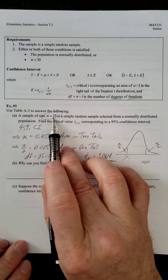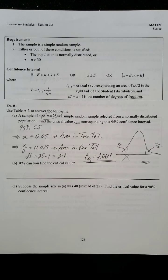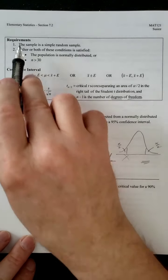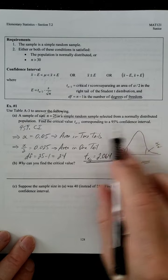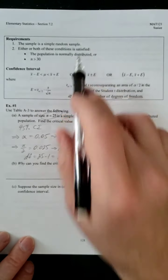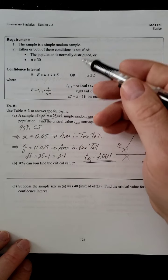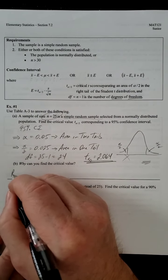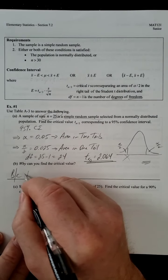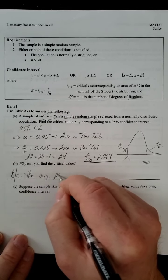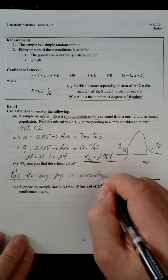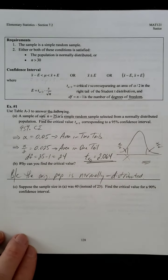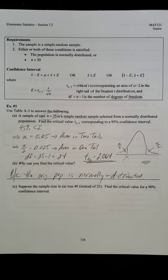Now, remember, n is small. n is less than 30. So, that's strike one. But, what else do we know? It's a simple random sample, which is the first requirement, from a normally distributed population. So, that's that other condition. So, as long as one of those two conditions is satisfied, we're good to go. So, this is able to be done because the original population is normally distributed. So, that's why we can do it.